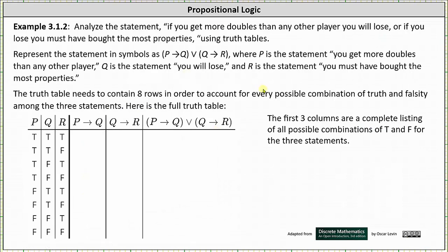Now let's go back to the Monopoly question. We represent the statement in symbols as 'if p then q, or if q then r,' where p is 'you get more doubles than any other player,' q is 'you will lose,' and r is 'you must have bought the most properties.'